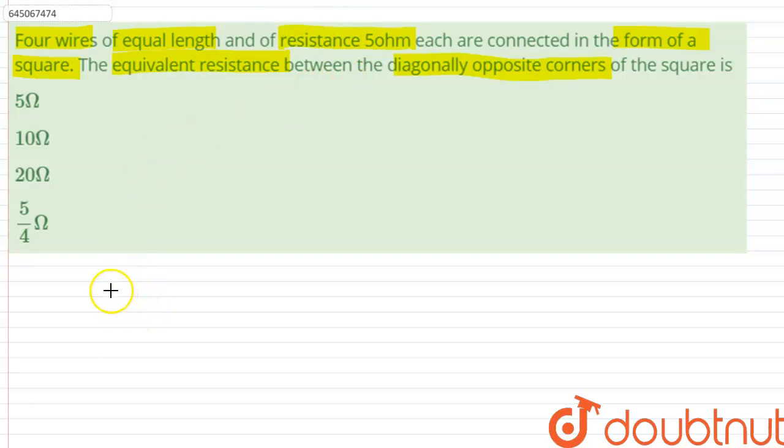Therefore, let us assume that this is the situation given to us in the question. This is A, this is B, this is C, and this is D.